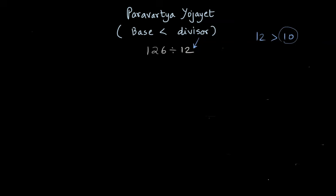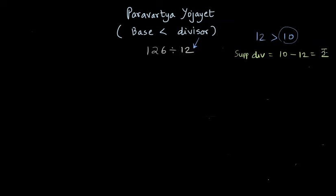Now what we need to find is the supplement divisor. The supplement divisor is the base minus the divisor, which is 10 minus 12, giving us minus two. We can write this minus two as a bar over two.